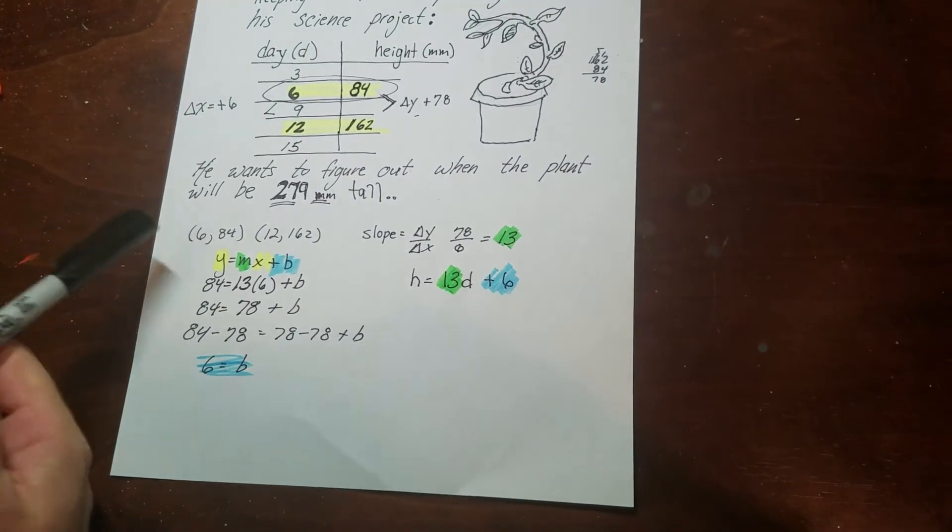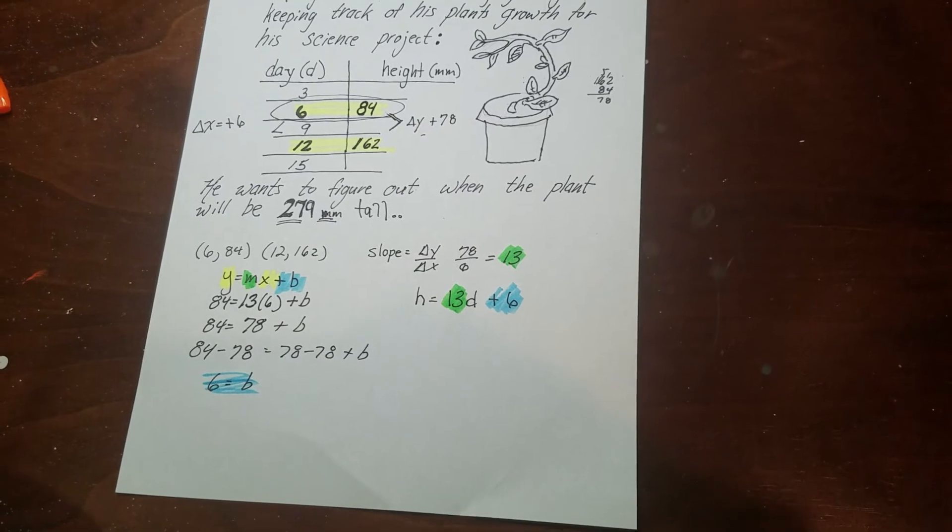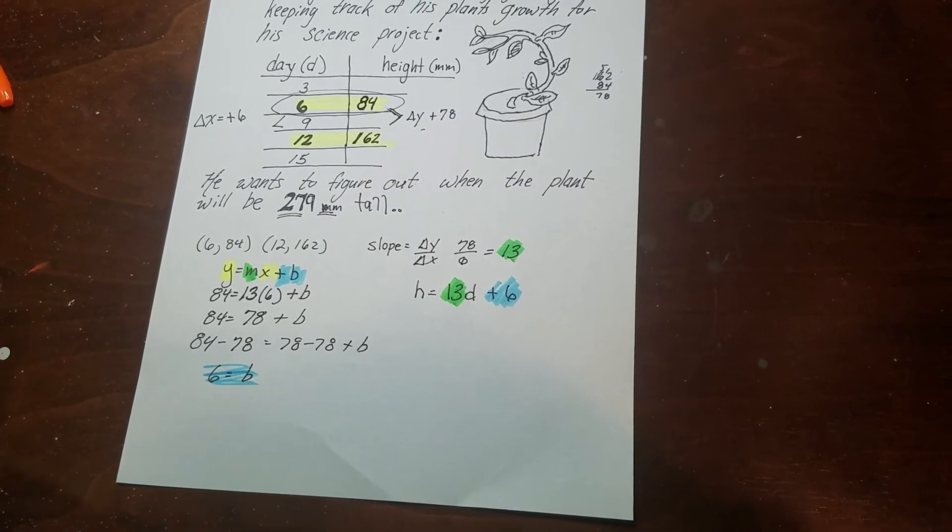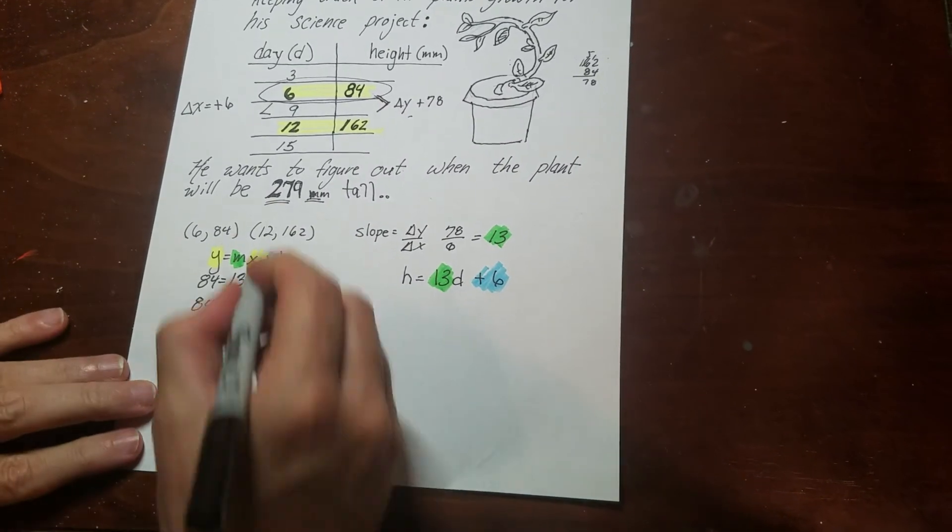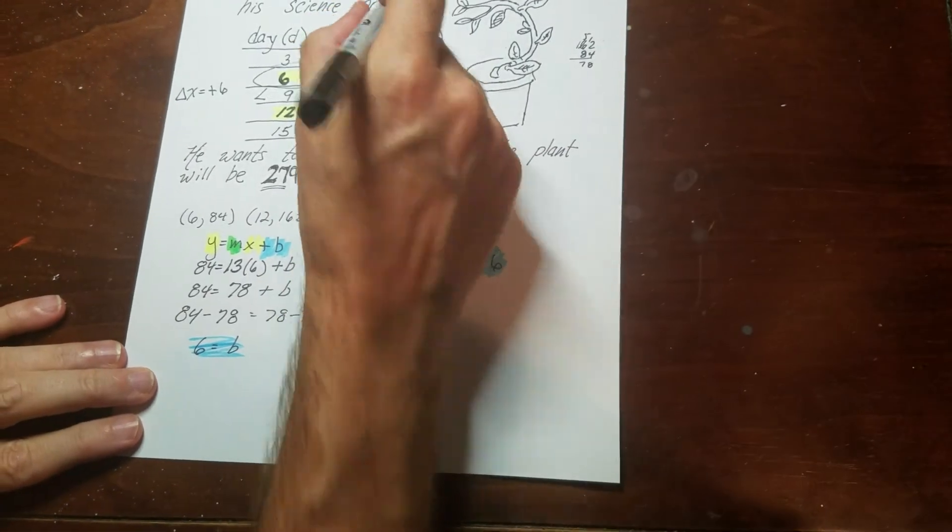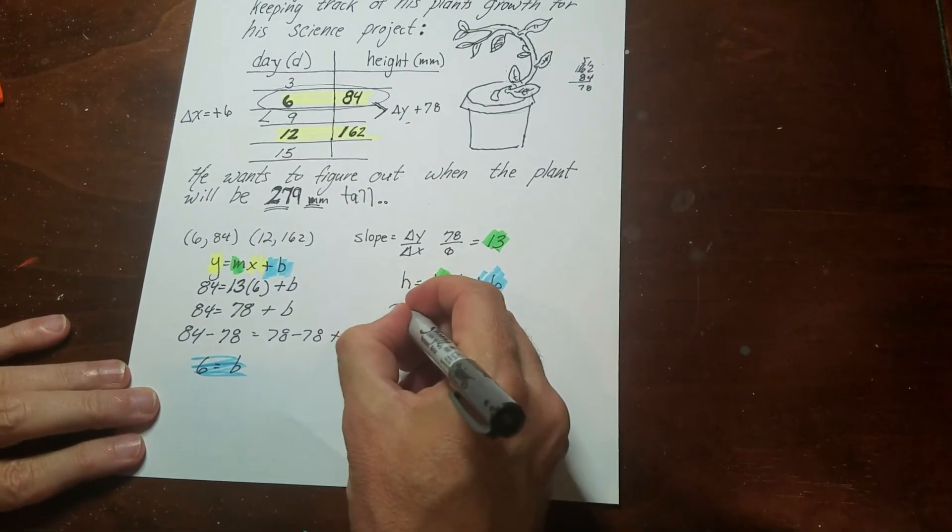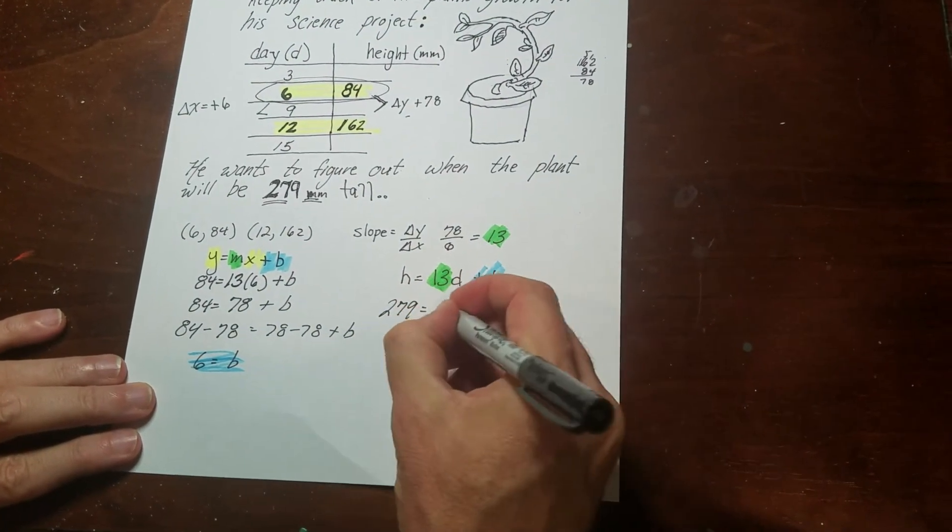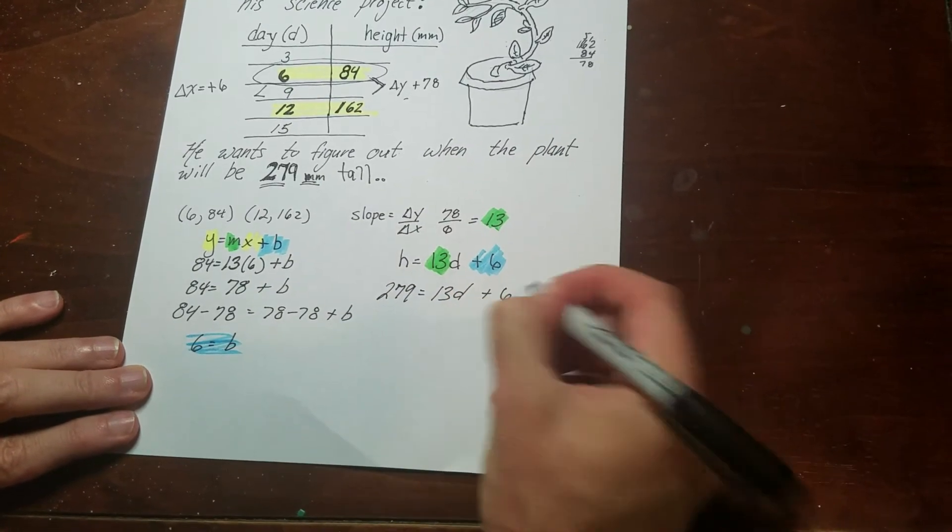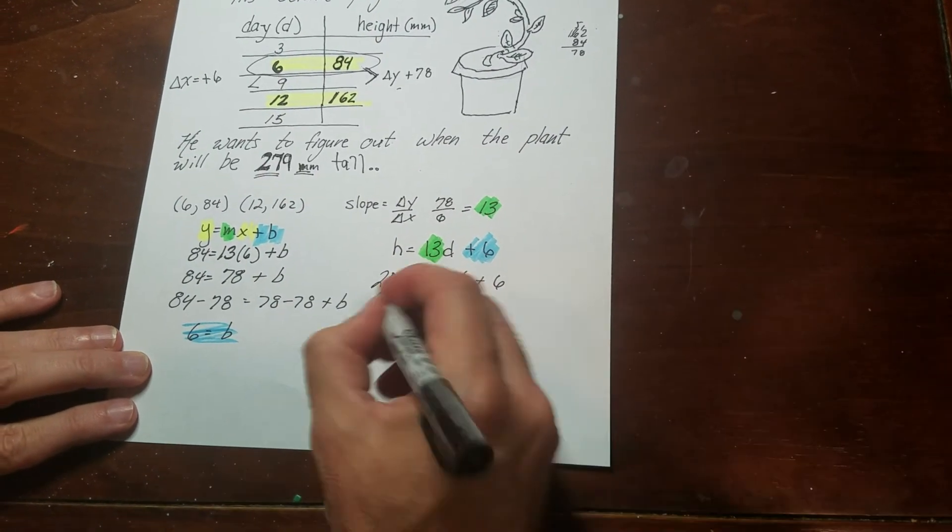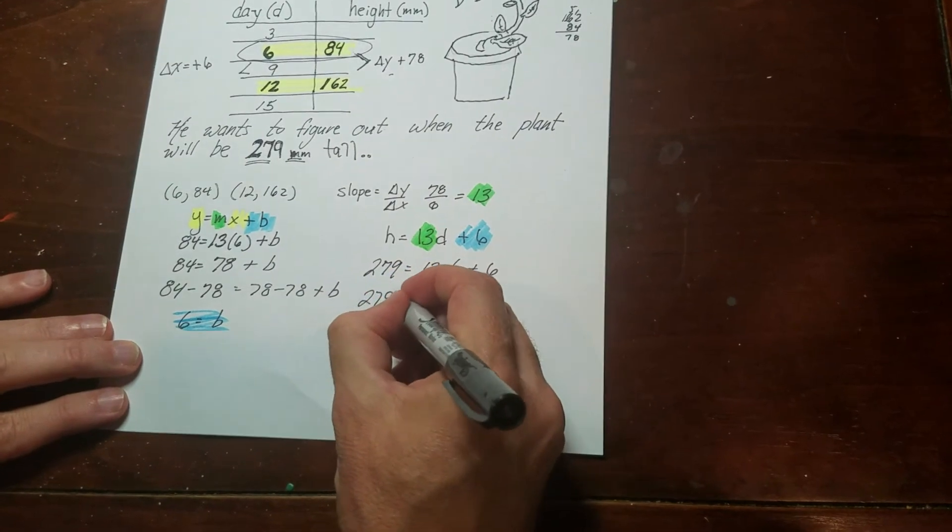It says ultimately he wants to figure out when the plant will be 279 millimeters tall. So that's a height. So that's an h. So what I'm going to do is I'm going to take the 279 and put it here in that equation. And then just do my regular solving stuff.